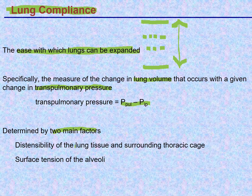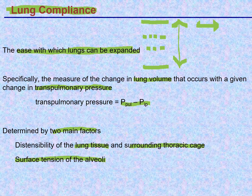There is a normal range of compliance — very high compliance (very easy to expand) is not good because the person cannot breathe out easily, and very low compliance (very difficult to expand) means trouble breathing in. There is a Goldilocks zone of ideal normal compliance values. People with very high lung compliance can breathe in easily but cannot breathe out very easily; people with very low compliance have trouble breathing in.